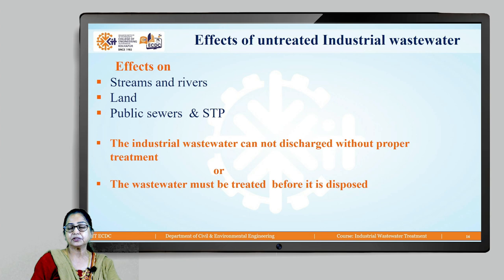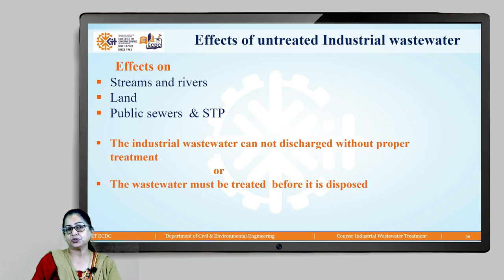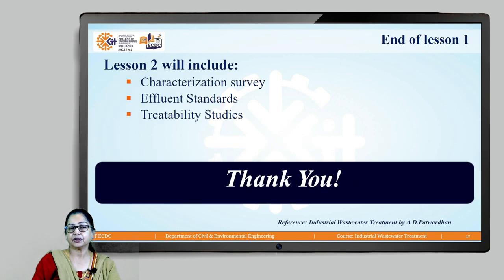It will cause anaerobic zone development, odour, colour, and dead fish — so it cannot be disposed of in streams and rivers. Disposal on land will block all the pores, create anaerobic zones, and the main threat is groundwater pollution. If disposed into a public sewer and sewage treatment plant, it will result in shock loading of the STP and cause malfunctioning. We can therefore conclude that wastewater from industry must be treated before disposal.